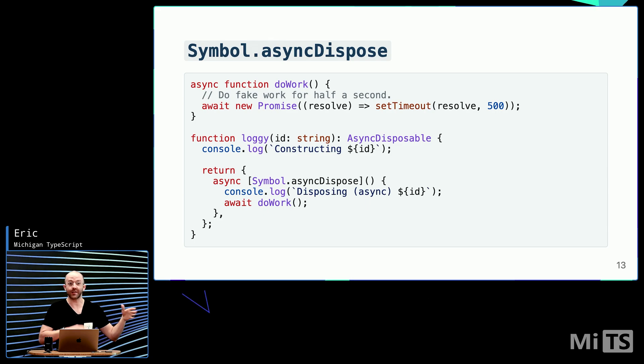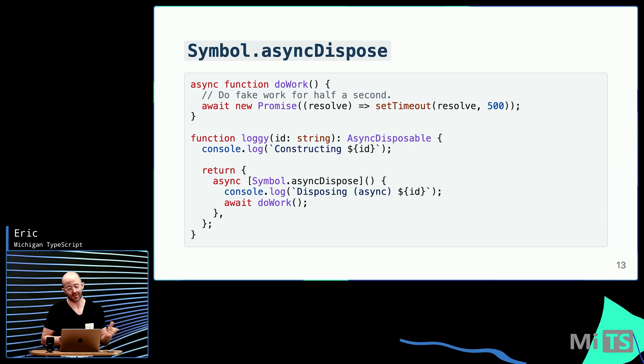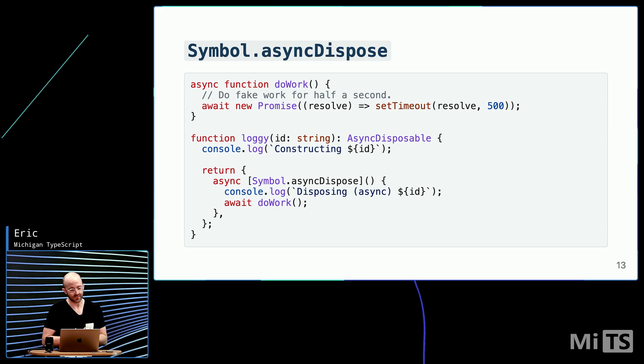And then there's the async version. So, symbol.async dispose does the same thing, but with async constructs. So, you can do an async symbol.async dispose. That's a mouthful that will allow you to await functions inside of that dispose function.